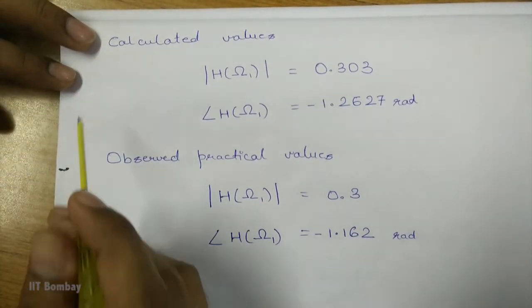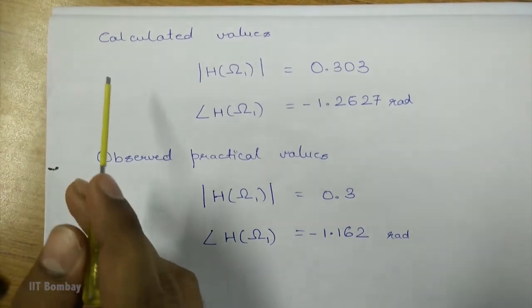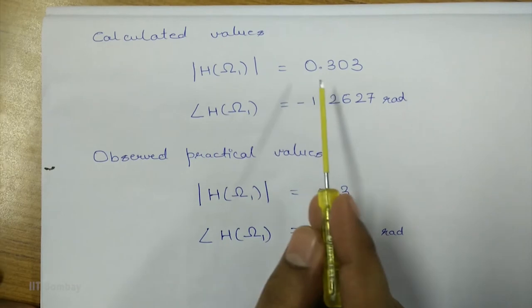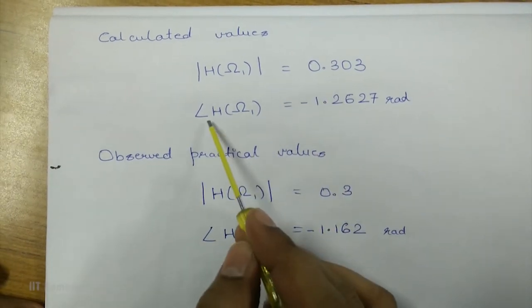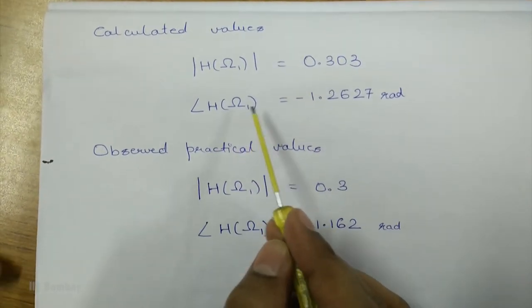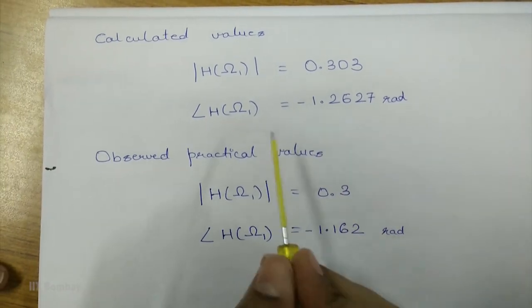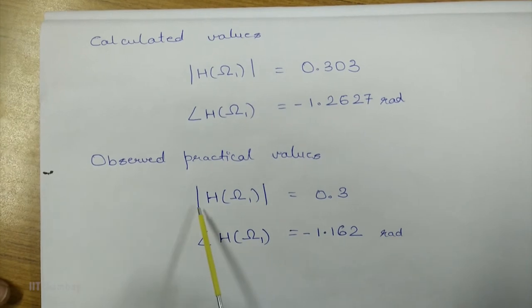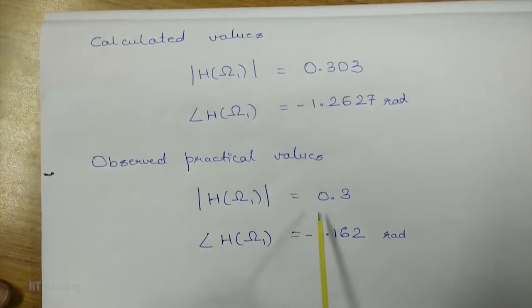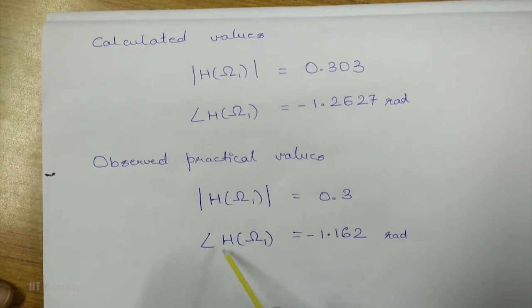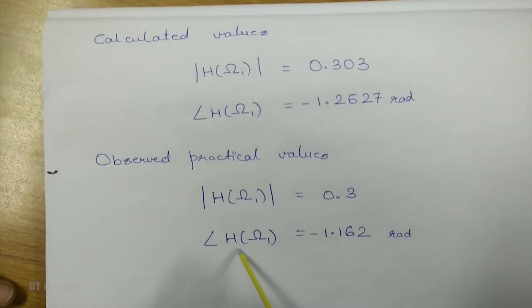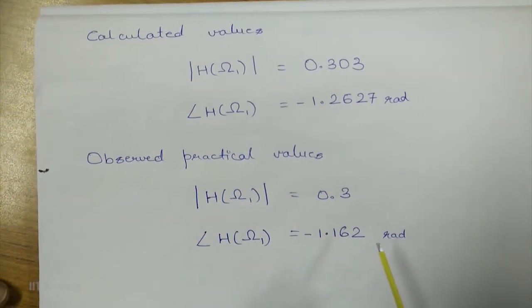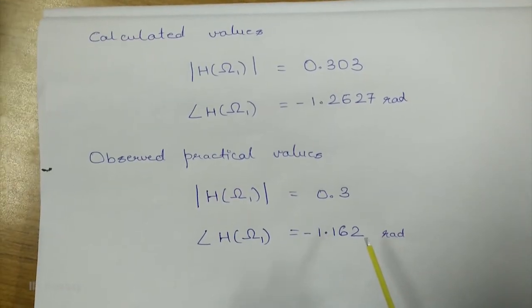For Omega equal to 1000π radians per second, we have calculated the amplitude of the transfer function to be 0.303 and the argument to be minus 1.2627 radians. From the practical observation, we get that the amplitude of the transfer function is approximately 0.3 and the argument of the transfer function is minus 1.162 radians, which is within experimental error.